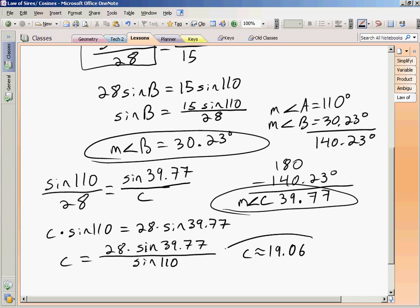That's side c. At that point, I've solved for all three of the missing lengths, and the triangle has been solved.